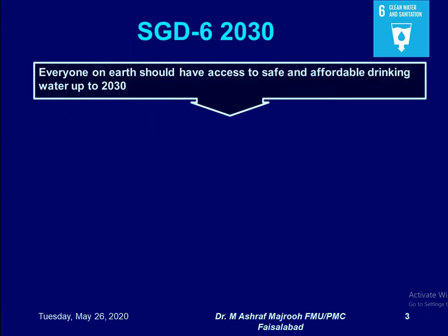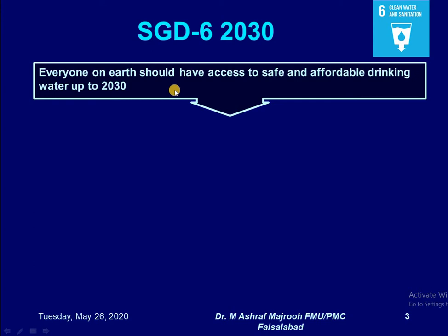The Sustainable Development Goal 6 indicates the priority agenda. Water is a serious issue, a global issue, and it is kept in the agenda of Sustainable Development Goal. The goal is defined as everyone on earth should have access to safe and affordable drinking water up to 2030.